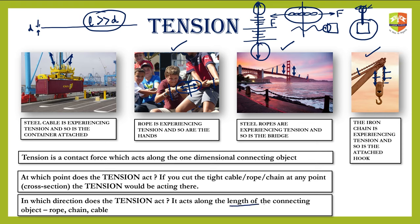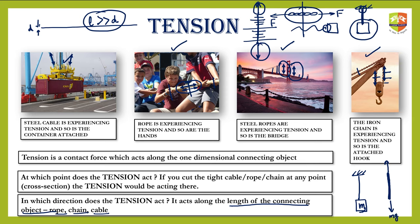In which direction does the tension act? It always acts along the length of the connecting object — whether it is a rope, chain, or cable. I have shown two directions: the string is hanging from the ceiling and being pulled by a mass downwards. The contact of the ceiling pulls it upwards, and the mass pulls it downwards, so the string is being pulled on both sides — hence the double arrow indicating tension.